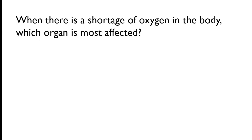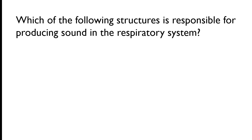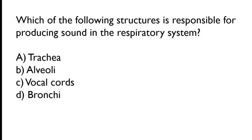When there is a shortage of oxygen in the body, which organ is most affected? Intestine, skin, kidney, brain. The correct answer is option D: when there is a shortage of oxygen in the body, the brain is the organ most affected. Which of the following structures is responsible for producing sound in the respiratory system? Trachea, alveoli, vocal cords, bronchi.